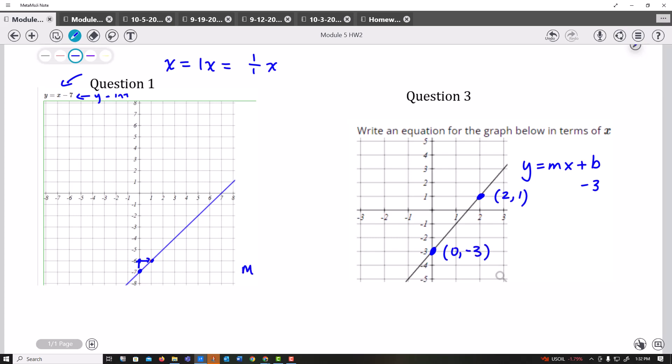So to find my slope, I would subtract the y's over subtract the x's and I get negative 4 over negative 2. A negative and a negative is a positive 2. So this becomes y equals 2x minus 3.